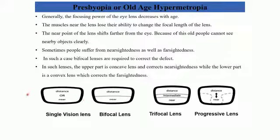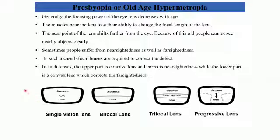People who suffer from only one type of disorder — either myopia or hypermetropia — use single vision lenses. If suffering from hypermetropia, they use convex lenses occupying the lower portion of the specs. If suffering from myopia, they use concave lenses on the upper part.